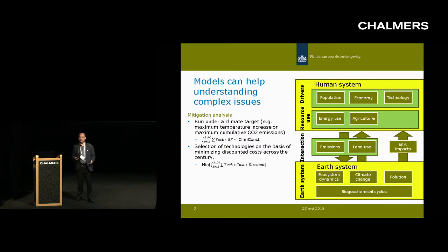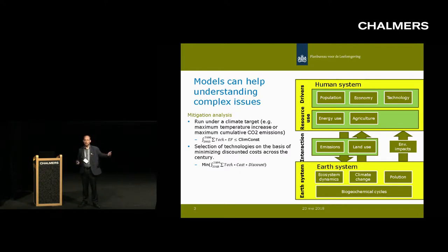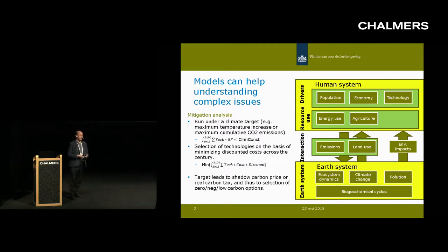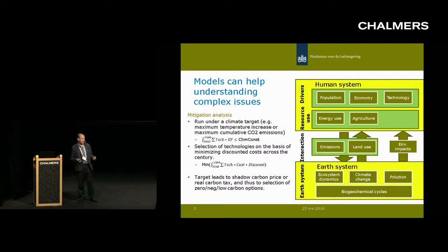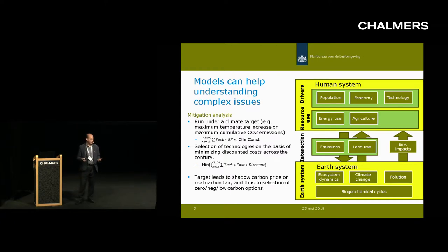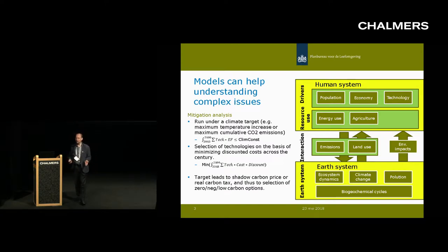We know the cost of the different technologies over time, a discount rate is applied, and then cost optimization occurs across the century. That means that in the model there is either a shadow carbon price or a real carbon tax. If you want to achieve a certain target, the model starts to select and prefer low-carbon options, preferably even zero-carbon options, and if the price is high enough, negative-carbon options.